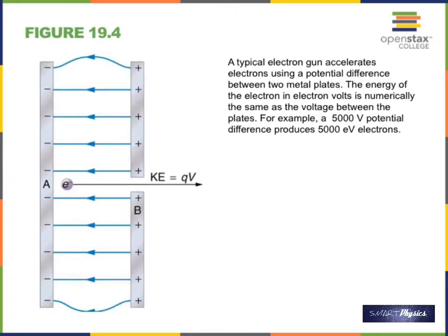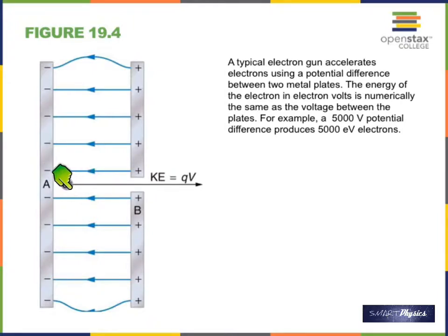Between these two plates there is an electric field always from positive to negative. This is an electron, so it will by itself move in the opposite direction — electrons always move opposite to the field. As it moves, it will pick up kinetic energy. The formula for kinetic energy is one-half times mass times velocity squared.